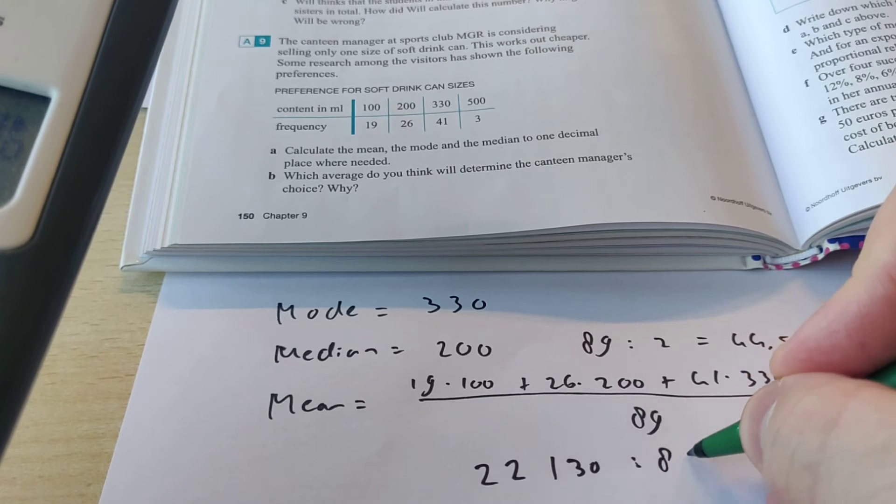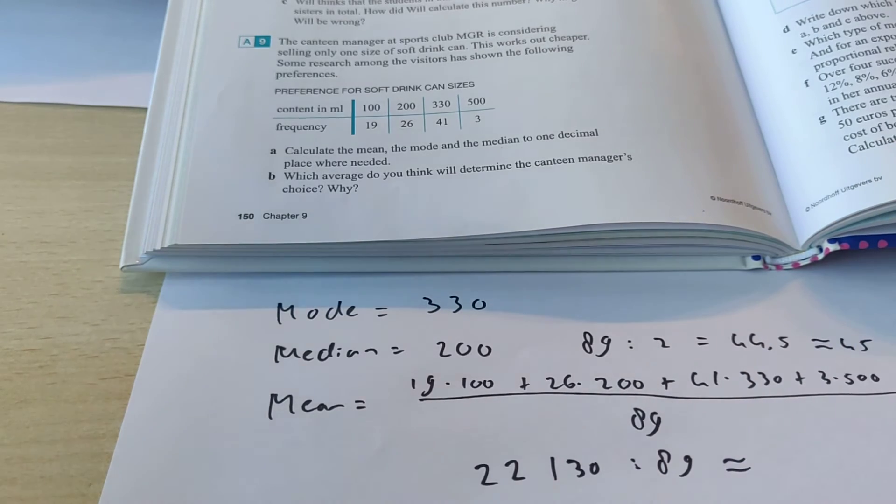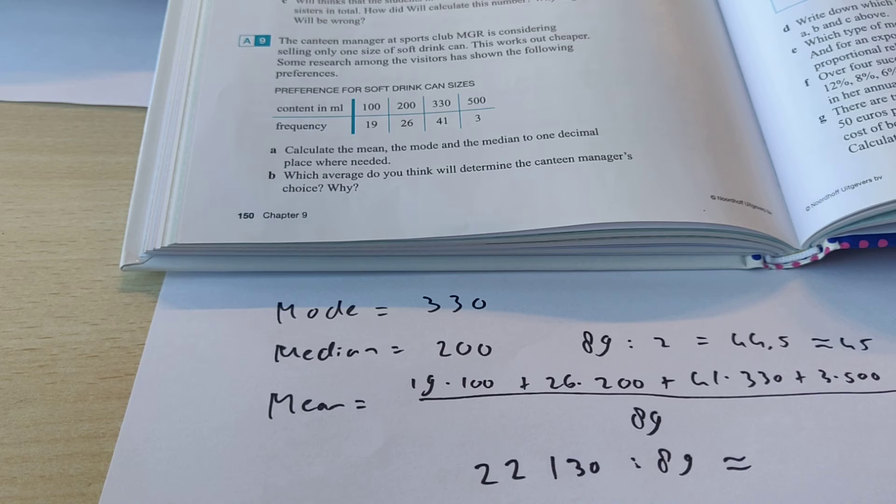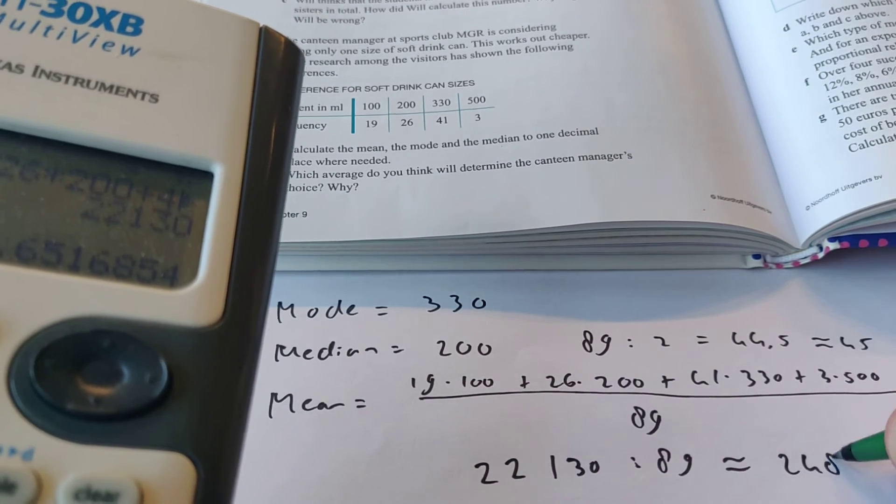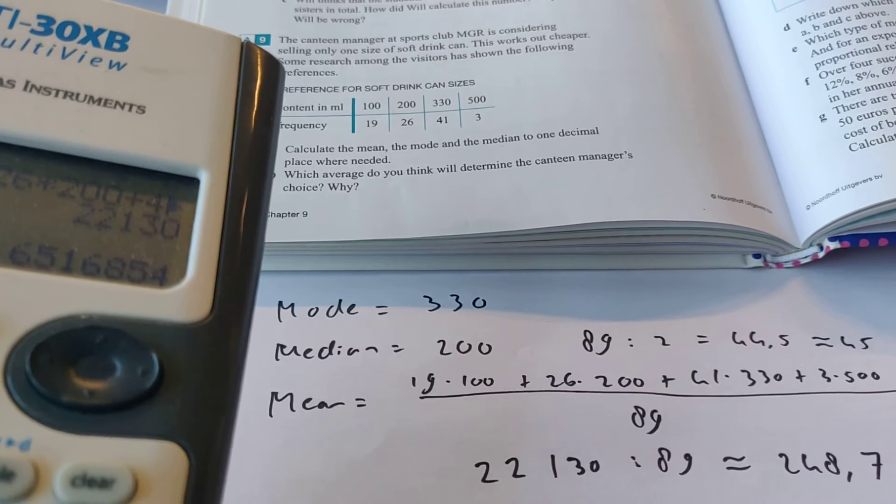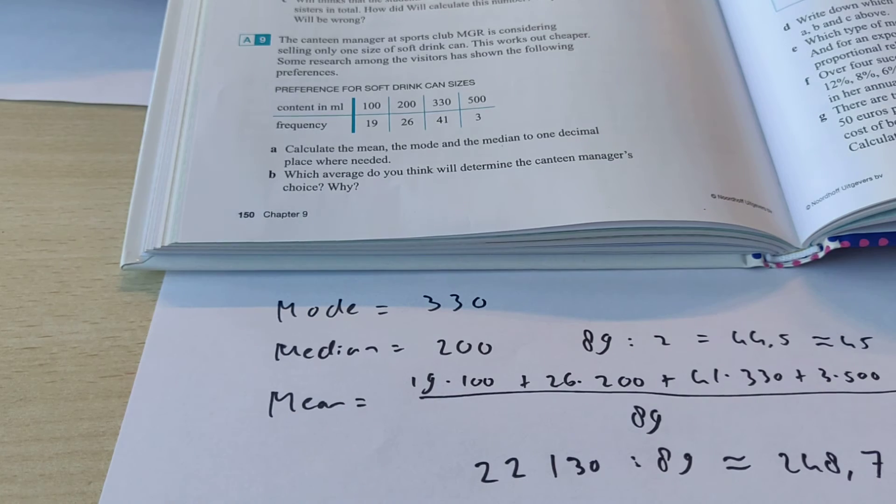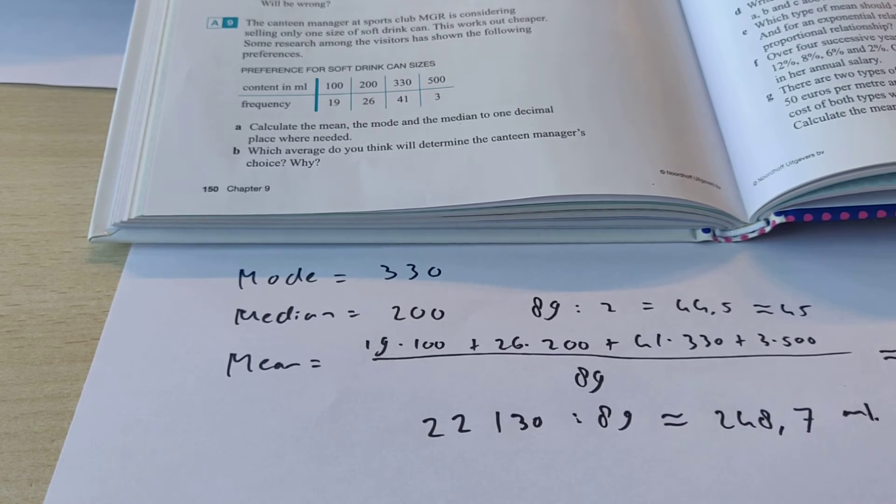Now, if you divide that by 81. Or 89, sorry. You get 248.7 milliliters. So, this is the average amount they want to have in a can.